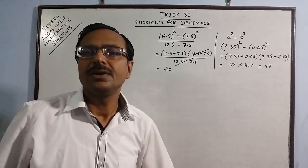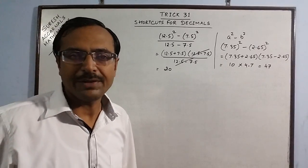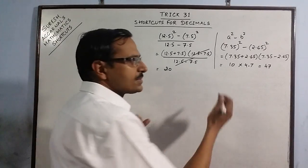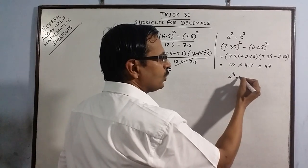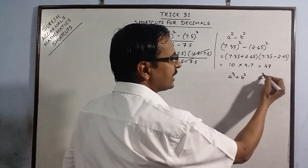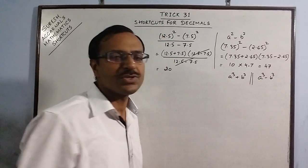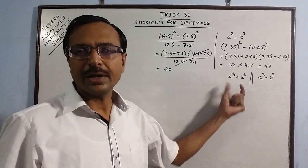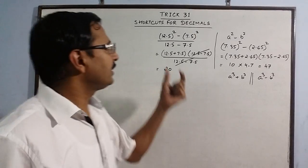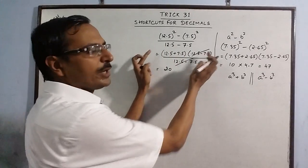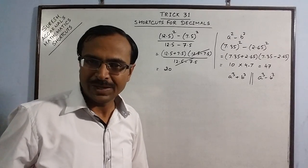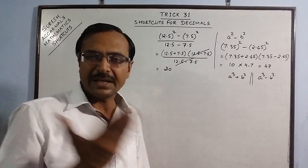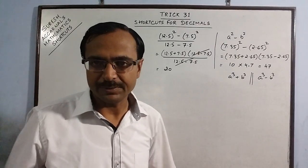Let us take another identity which can come in competitive exams. I am coming to one more identity — a cubed plus b cubed or a cubed minus b cubed. There may be questions involving these identities where the numerator contains the identity and the denominator contains one factor that also appears in the numerator, so that it cancels out. You can work on those problems once you know the basic concept of cancelling the common factor.